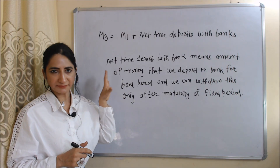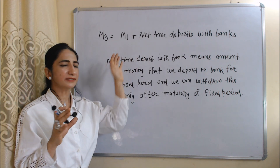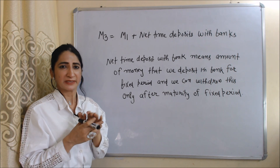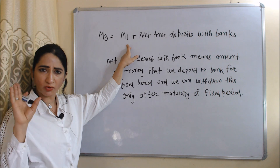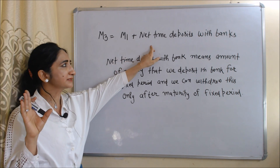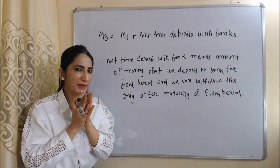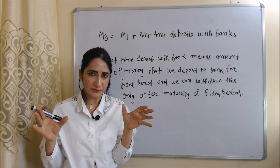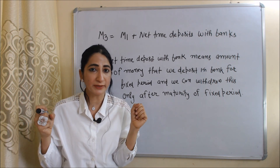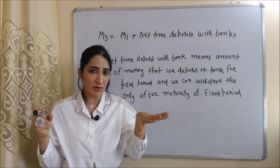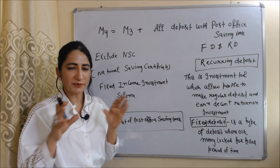M3 consists of all components of M1 plus net time deposits with bank. So M3 equals M1 plus net time deposit with bank. Net time deposit with bank is the amount of money that we deposit in a bank for a fixed time period, and we can withdraw this amount only after maturity of that fixed period.